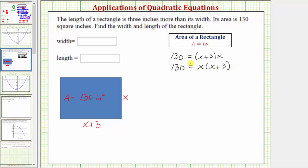Now we want to solve this equation for x, so let's clear the parentheses by distributing here. So 130 is equal to x squared plus three x.